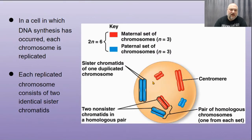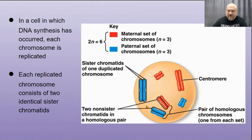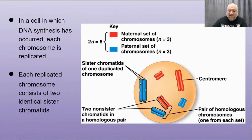When DNA synthesis has occurred, each chromosome is replicated. During G1 we had one long blue, one medium blue, one short blue, one long red, one medium red, and one short red — the normal complement of six chromosomes with one of each pair. After S phase we replicate and make sister chromatids, which stick together but are still considered one chromosome. These would be a homologous pair.